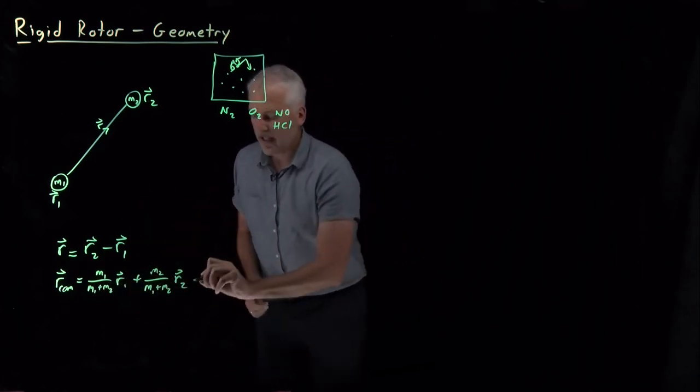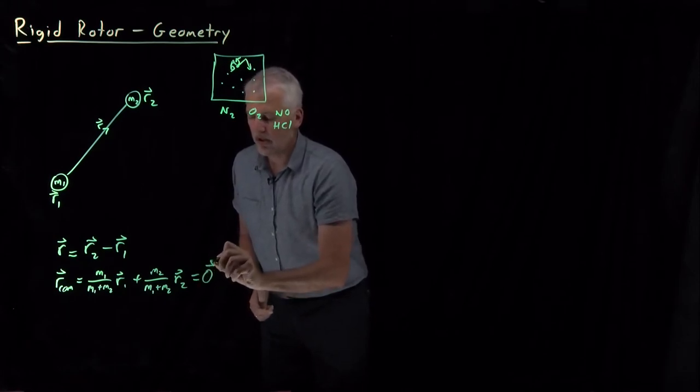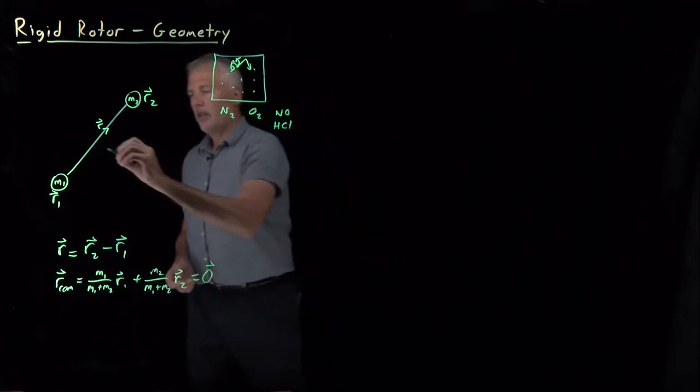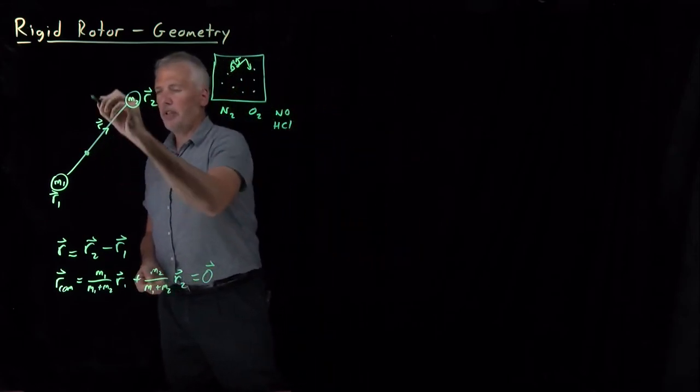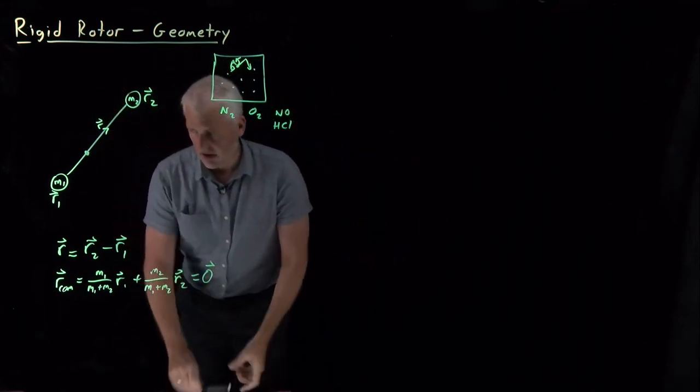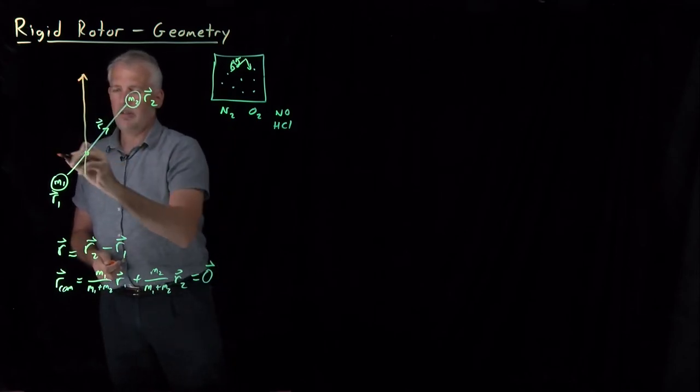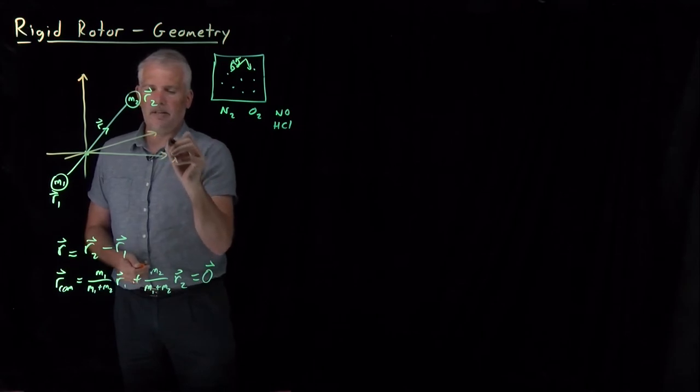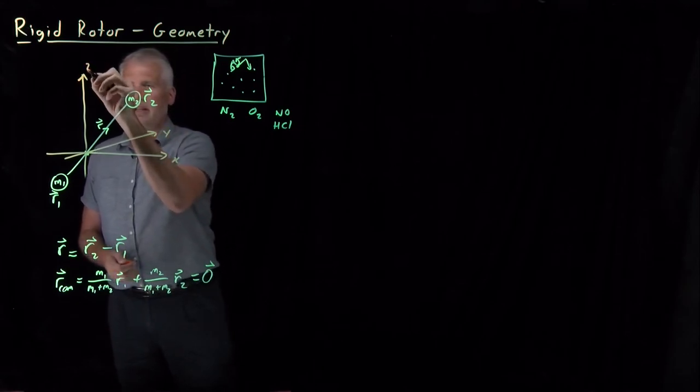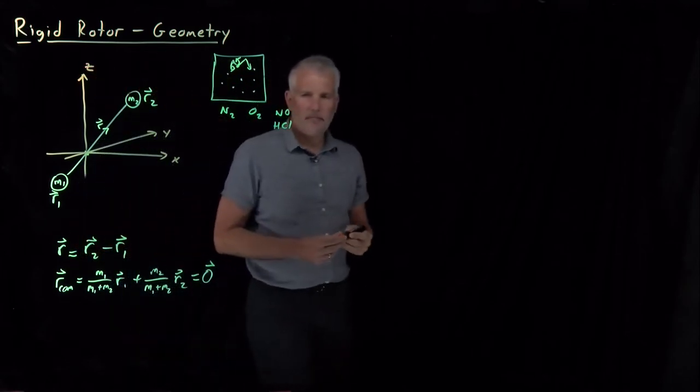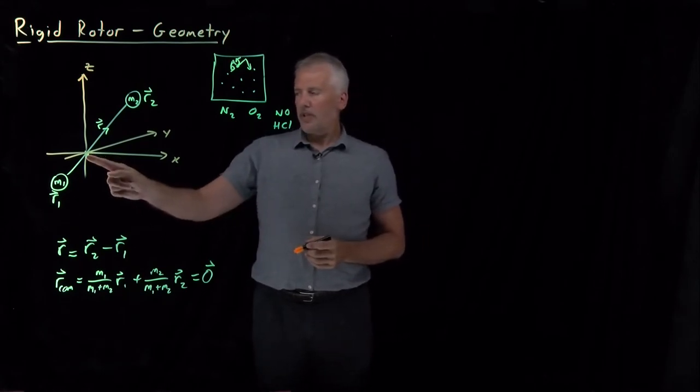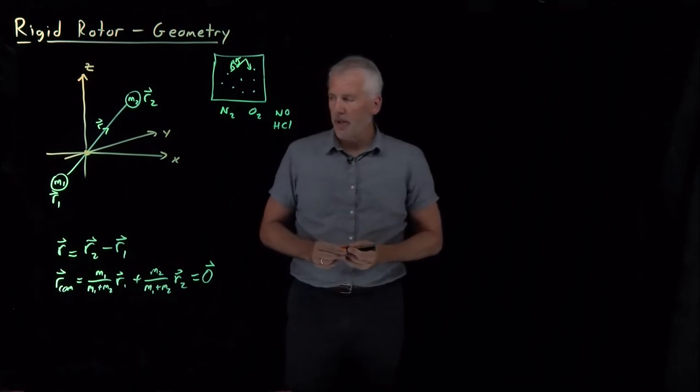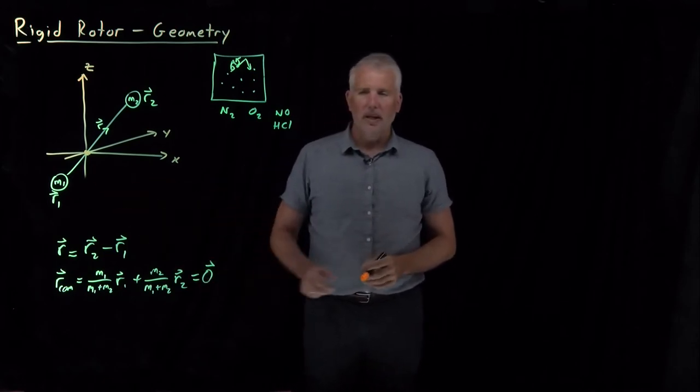Let's go ahead and make sure the center of mass of the molecule is at the origin. Here's the origin. Let's draw the axes in a different color. There's the x and y and z axes. I've put the center of mass of the molecule right there. I've made sure I've put the center of the mass of the molecule at the origin.